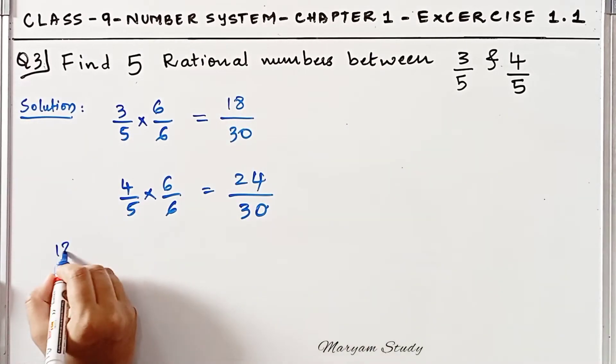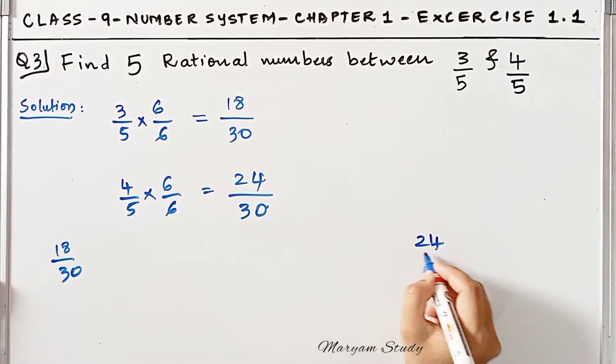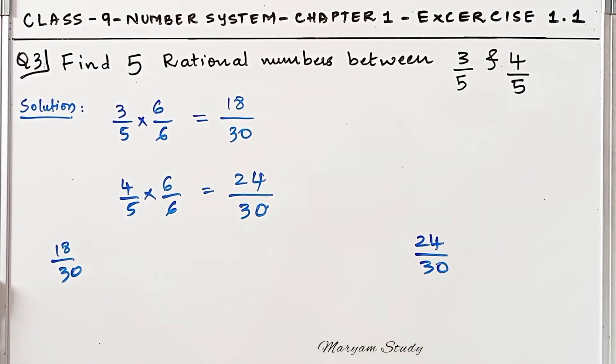So the smaller number, I will write here: 18/30. And the bigger number, that is 24/30, I will write here.